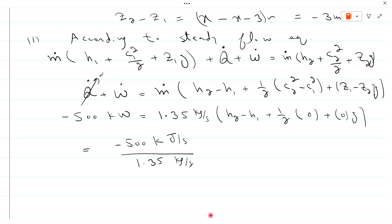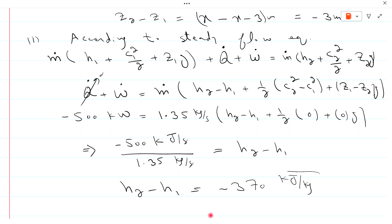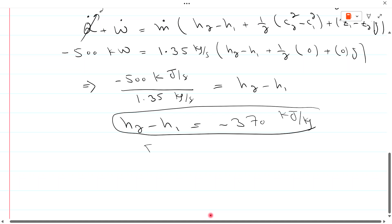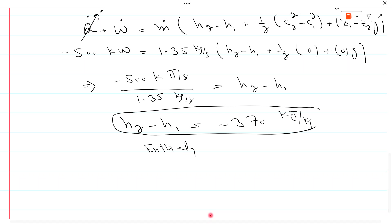The units work out as kilowatts (kilo joules per second) divided by kilograms per second, giving kilojoules per kilogram. So h2 minus h1 equals minus 500 divided by 1.35, which equals minus 370 kJ/kg. The negative sign means that enthalpy decreases across the turbine.